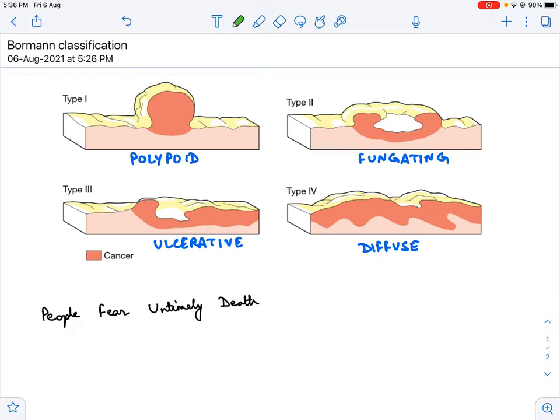There is a simple mnemonic for remembering this classification: people fear untimely death. Type 1, P is for polypoid. Fear, F, type 2 is for fungating. Untimely, type 3, that is U, ulcerative. And D is type 4, that is diffuse.